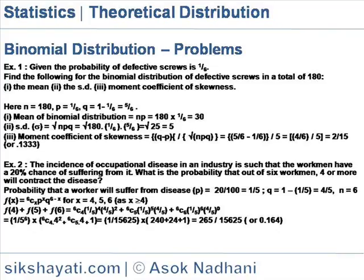Equal to 1 by 15,625 into 240 plus 24 plus 1, is equal to 265 by 15,625, that is 0.164.